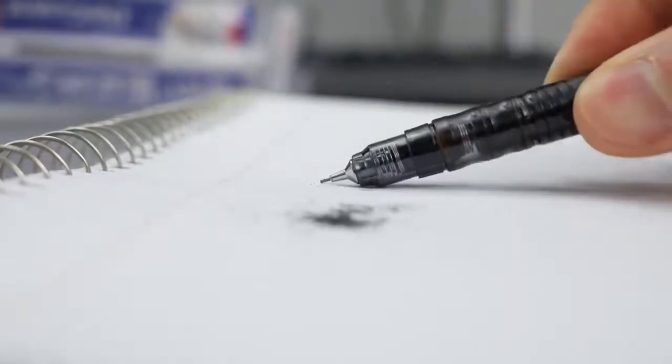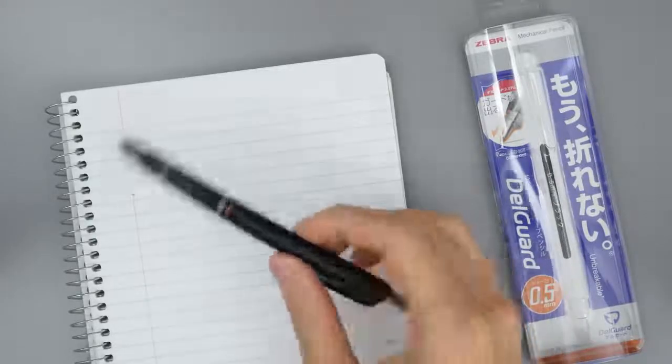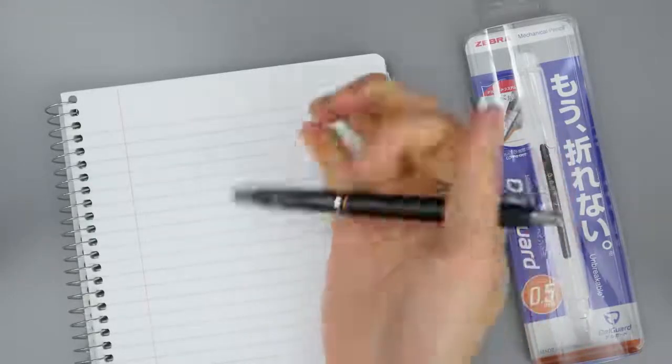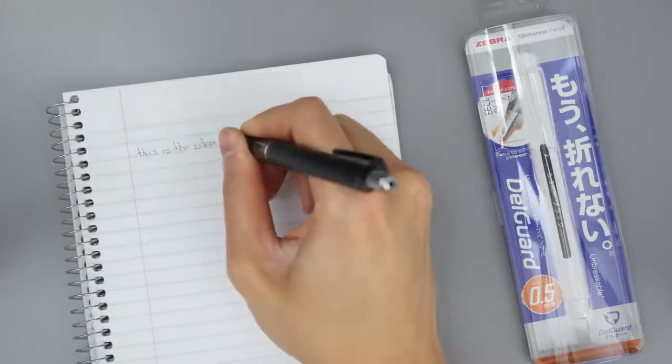So that's the Zebra Delgaard mechanical pencil. A pretty cool feat of engineering to solve the problem of lead breaking for heavy handed writers. But if you don't have this issue with breaking your lead it feels like any normal lightweight mechanical pencil.